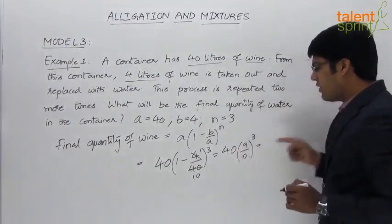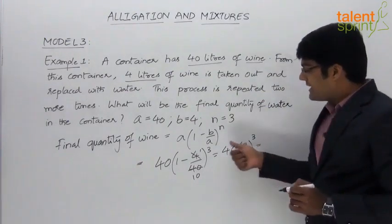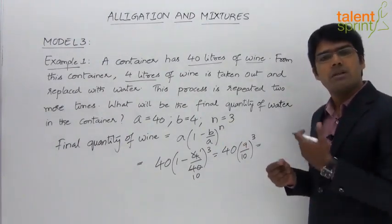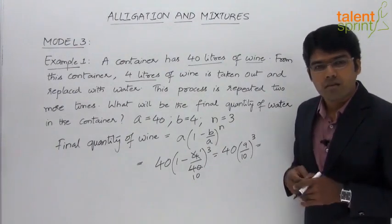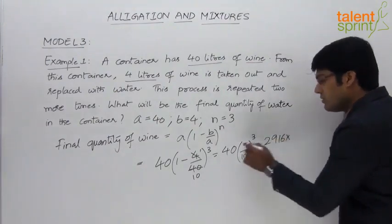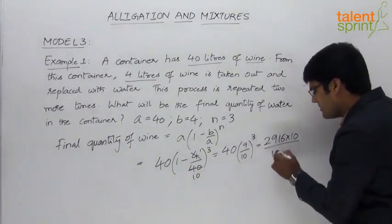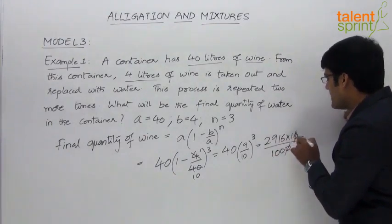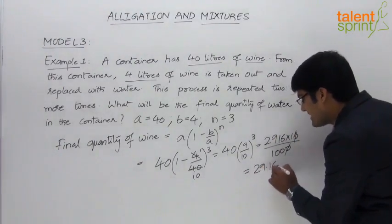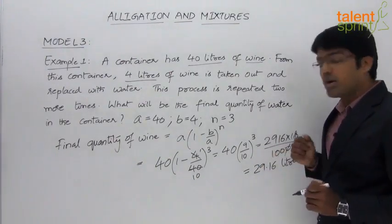This equals 40 into 9 cubed by 10 cubed. What is 9 cubed? It is 729. So we get 729 multiplied by 40, which equals 729 into 4 equals 2916, then multiplied by 10. Dividing by 1000, the zeros cancel and we are left with 2916 by 100, which equals 29.16 liters. So the final quantity of wine is equal to 29.16 liters.